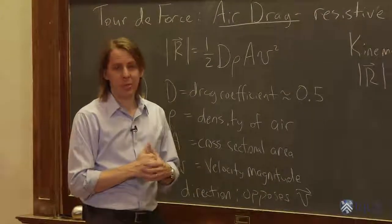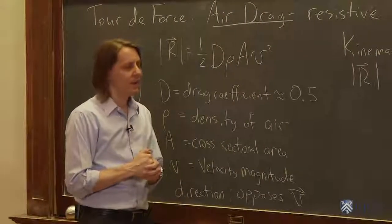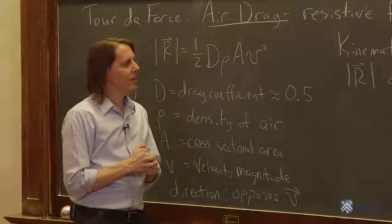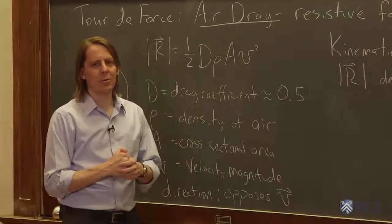So all the kinematics we did, remember, they were for constant acceleration. So x is x-naught plus v-naught t plus 1/2 at squared. That applied for constant acceleration.